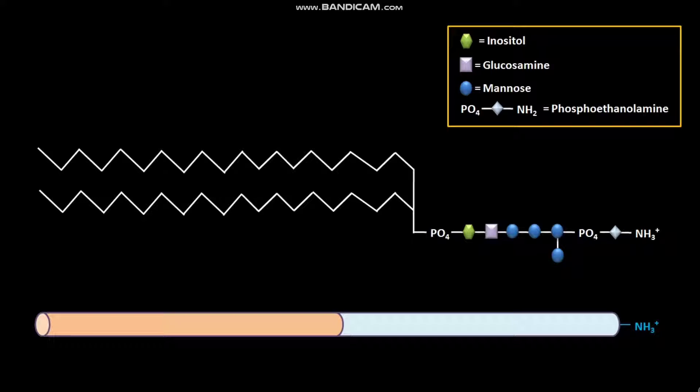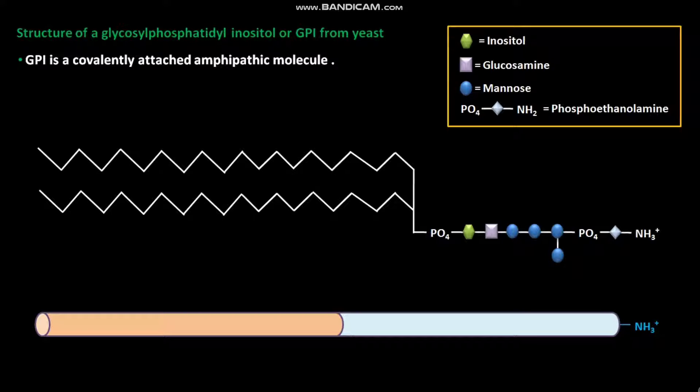Let us discuss the structure of glycosylphosphatidyl inositol or GPI from yeast. GPI is a covalently attached amphipathic molecule.